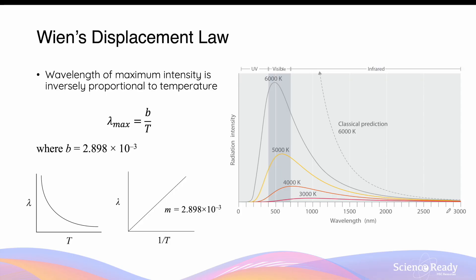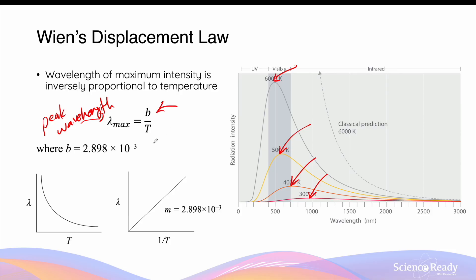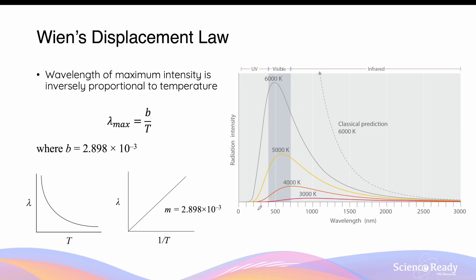Wien's displacement law describes the relationship between the wavelength of maximum intensity and the temperature of the black body. It states that the wavelength of maximum intensity (λ_max) is inversely proportional to the temperature of the object: λ_max = b/T, where b is Wien's constant with a value of 2.898 × 10⁻³ m·K. The higher the temperature, the shorter the peak wavelength. For 3000 K this is around 1000 nm, for 4000 K around 700 nm, and for 6000 K approaching 500 nm.